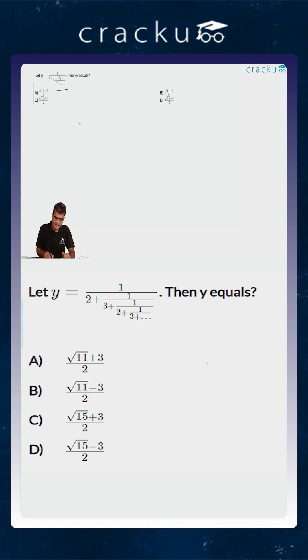So, if you are looking at the pattern, y is equal to 1 by 2 plus 1 by 3 plus 1 by dot dot and this again is basically y itself.